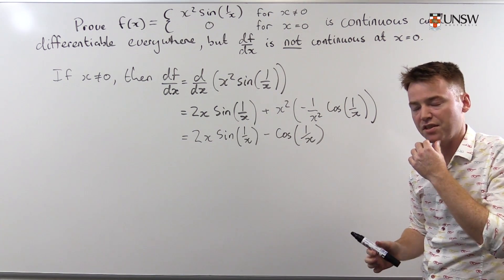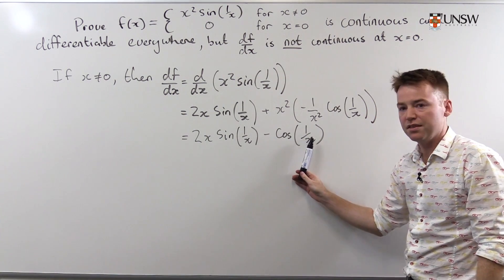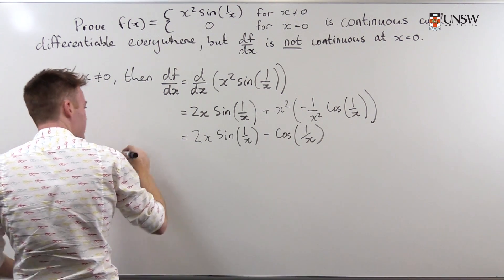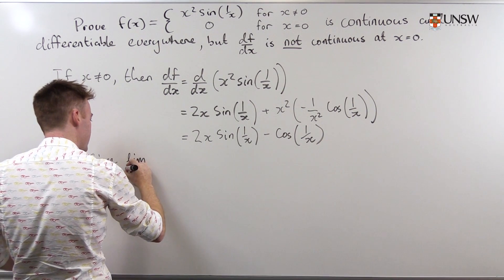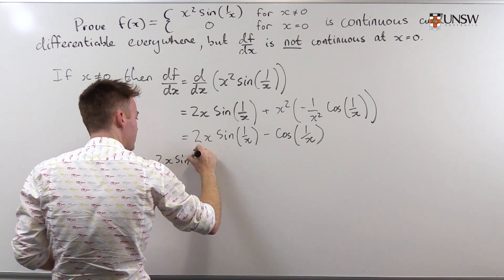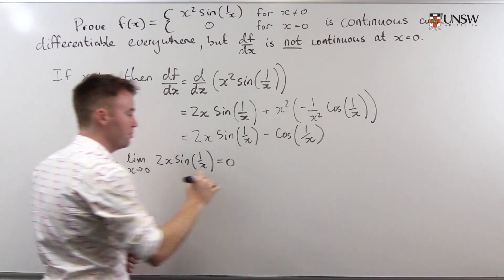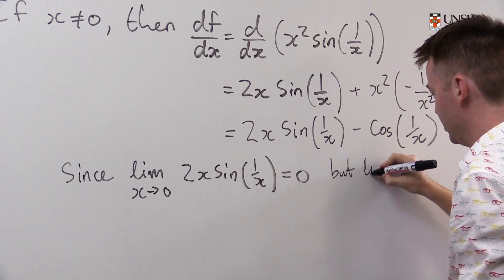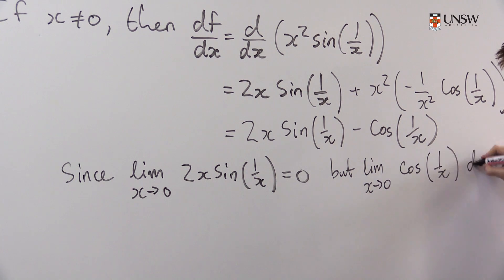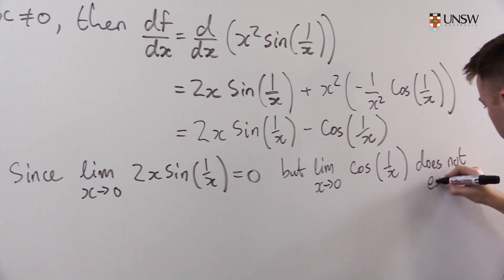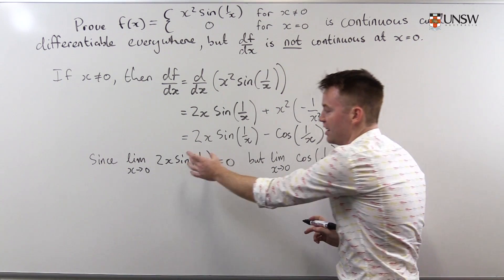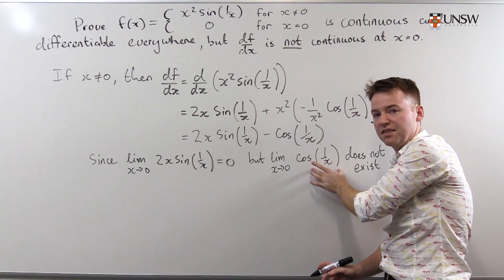What happens to this function as x gets small? We've seen already that the term 2x sine of 1 over x will go to 0, but cos of 1 over x does not have a limit as x goes to 0. So the limit as x approaches 0 of 2x sine of 1 over x equals 0, but the limit as x approaches 0 of cos of 1 over x does not exist. If you add something that exists to something that doesn't exist, the sum doesn't exist.